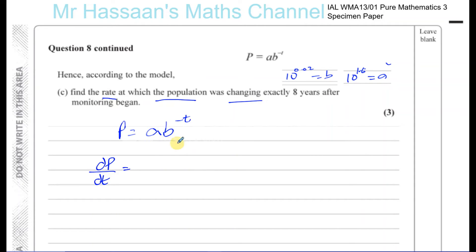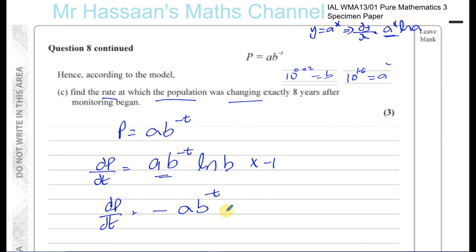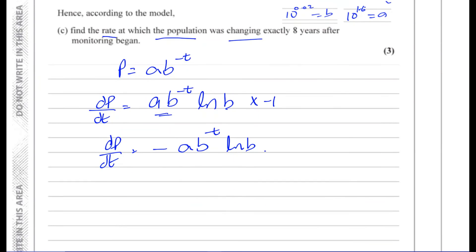This is an exponential function. In general, if y equals A to the power of x, then dy/dx equals A to the power of x times ln A, and if there's a function inside you multiply by its derivative using the chain rule. So dP/dT is A times B to the power of minus T — that part stays the same — multiplied by ln B, and then multiplied by minus 1, because the derivative of minus T is minus 1. So dP/dT equals minus A times B to the power of minus T times ln B.